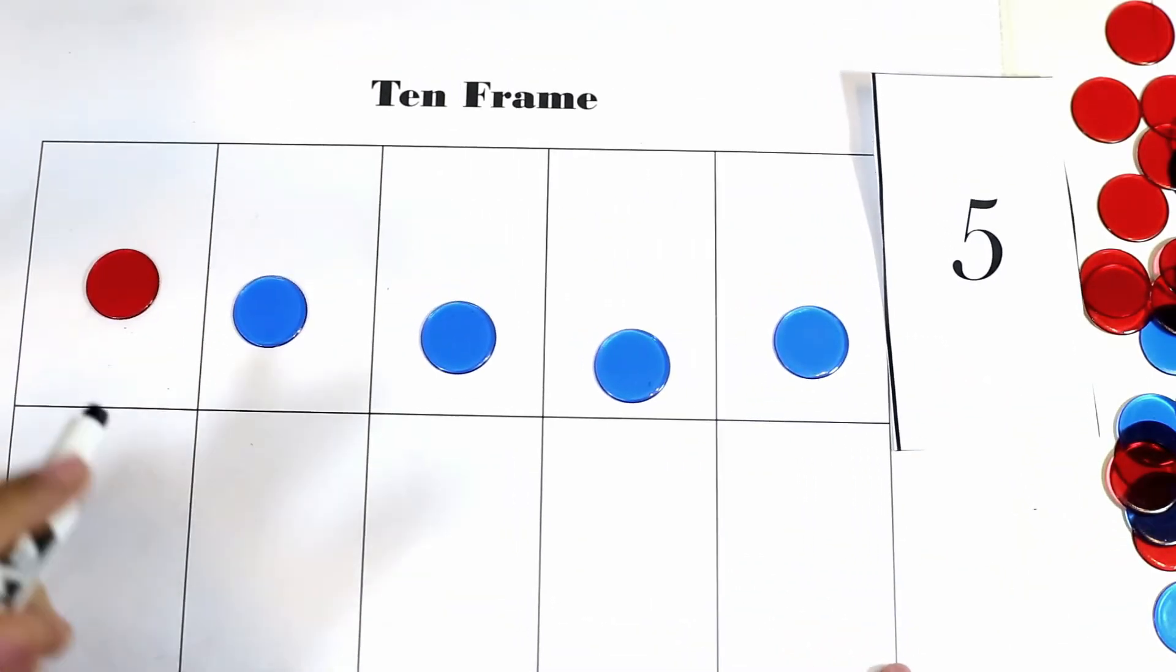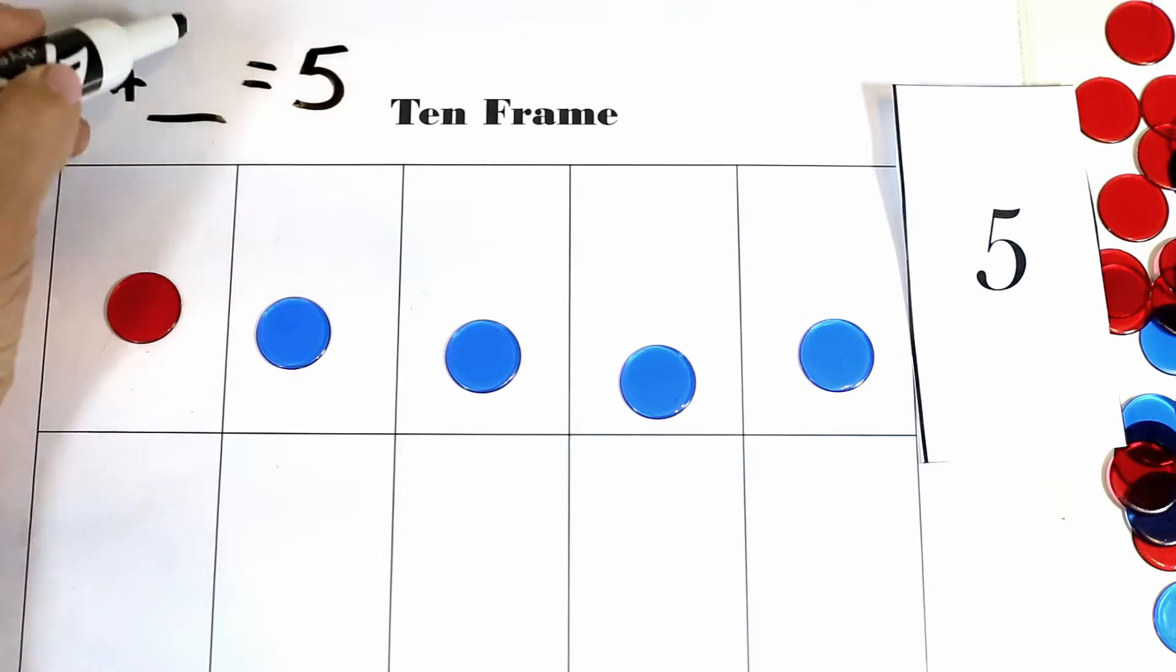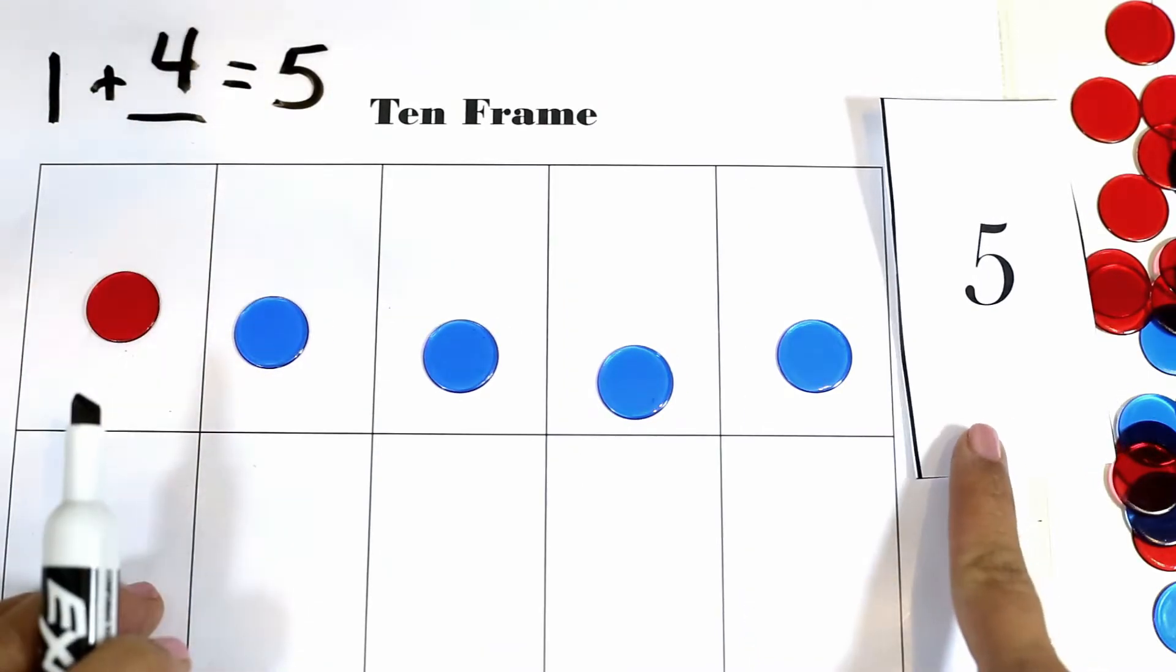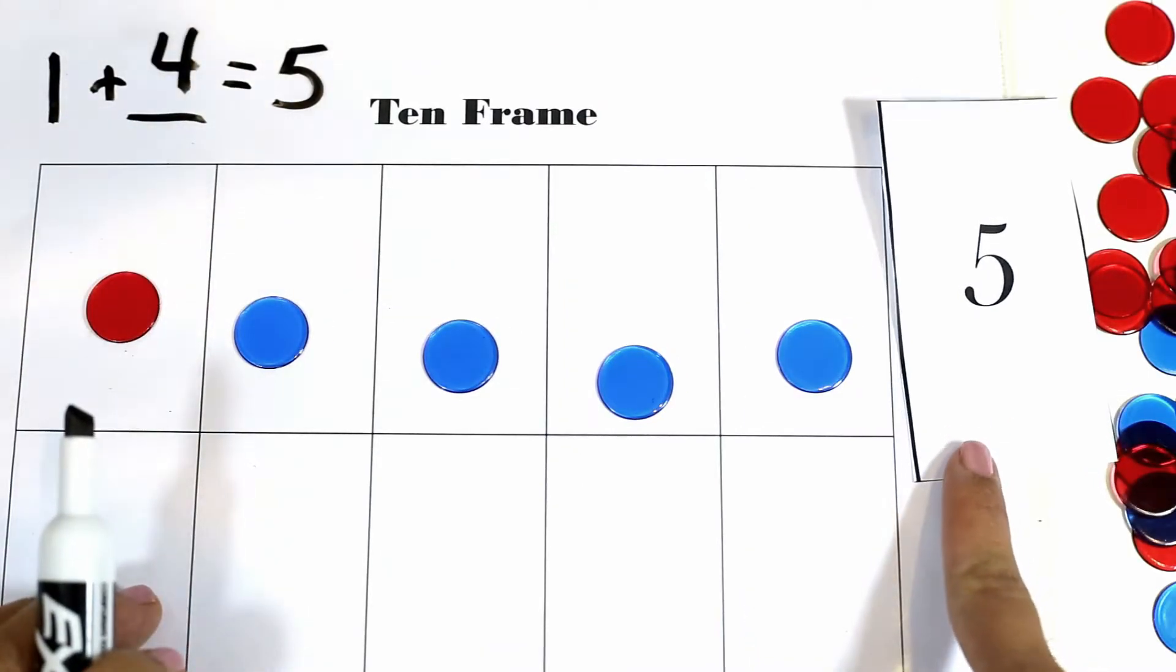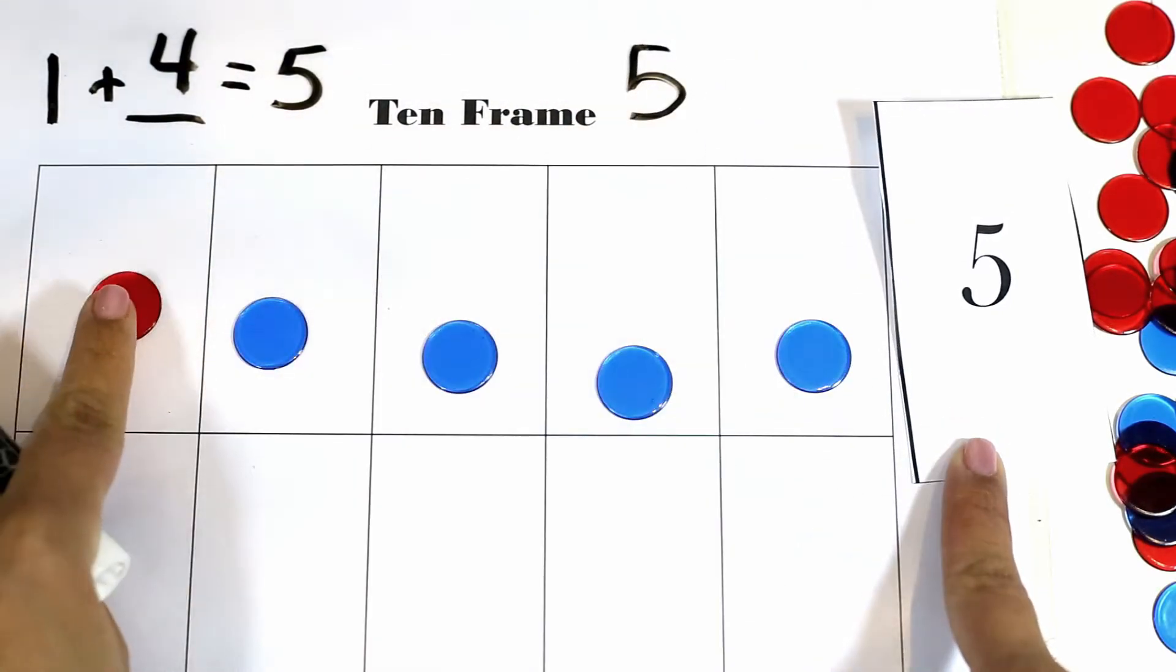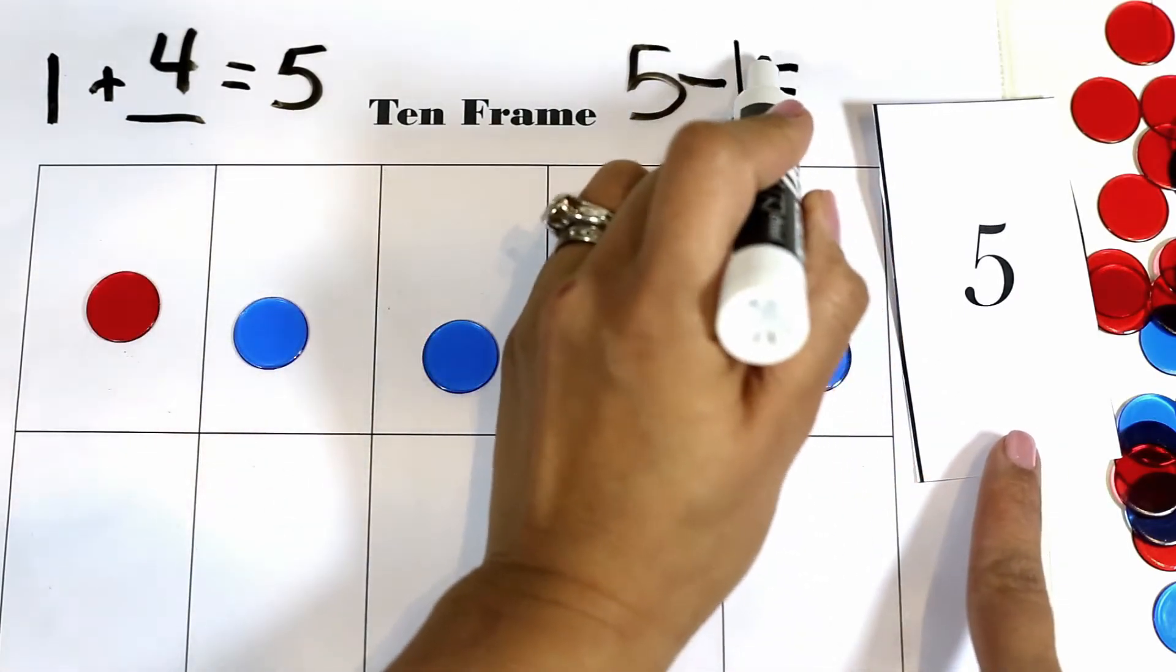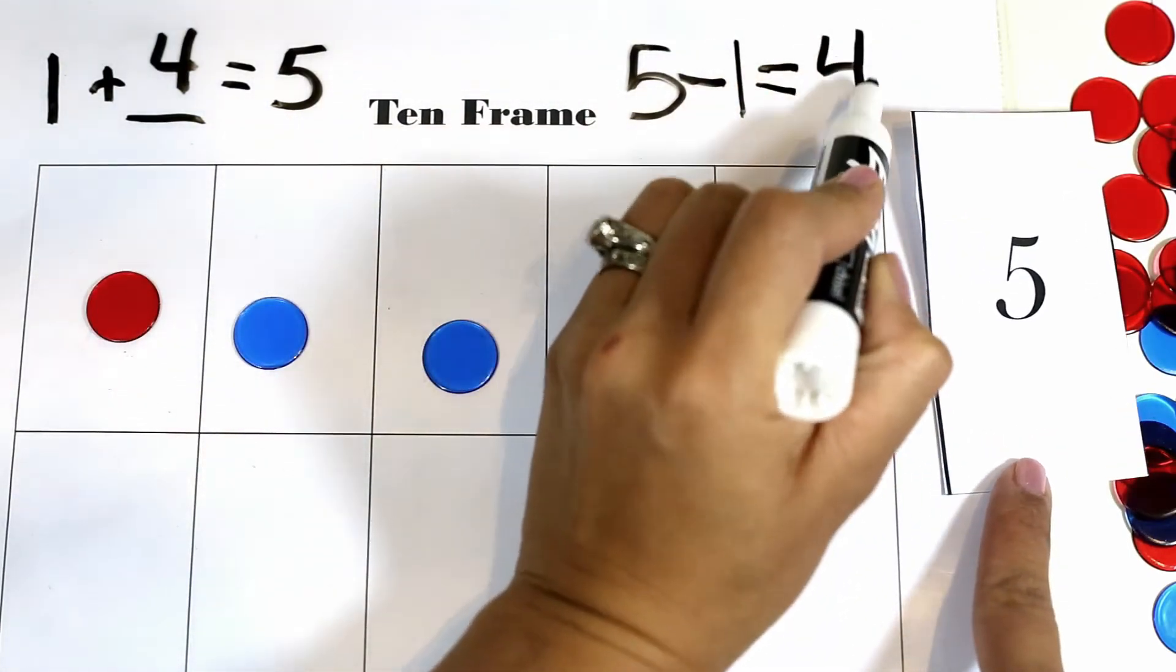So I just made this number sentence: one plus how much equals five. One plus four equals five. Or we can do the subtraction problem to that which is five minus the part that I do know, one, gives me the difference of four.